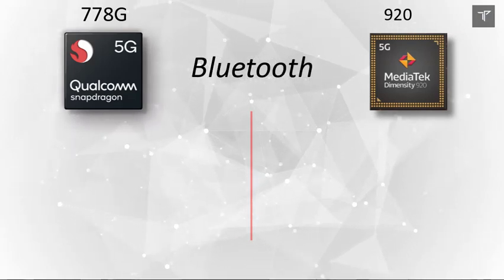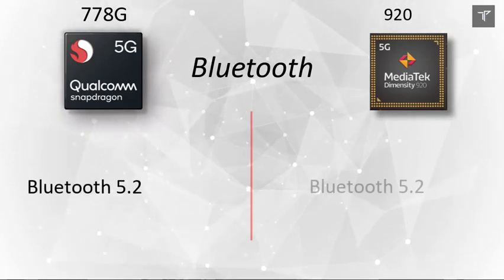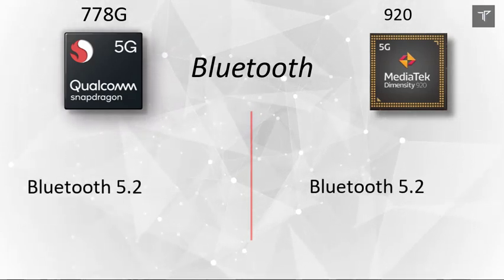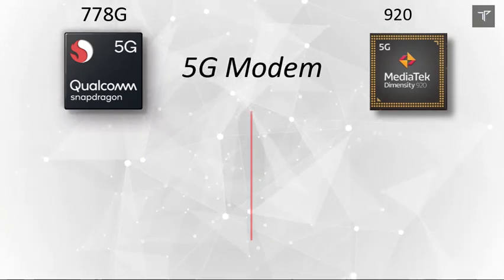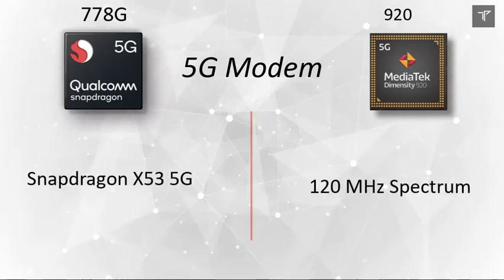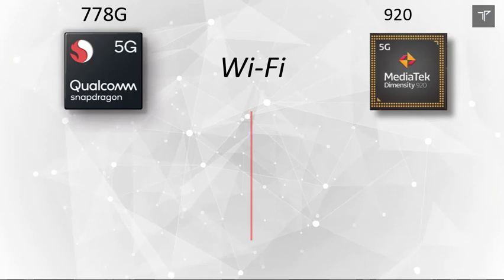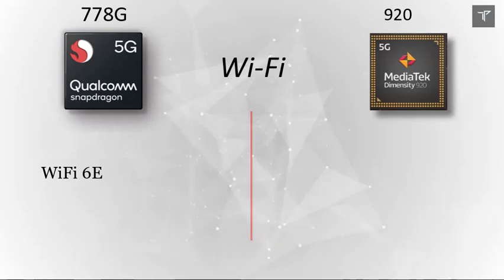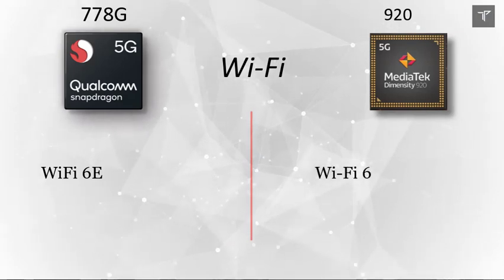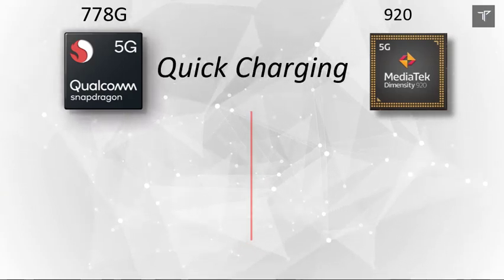The Bluetooth connectivity on both processors is the same at Bluetooth 5.2. Both processors are 5G-enabled with 5G modems. Wi-Fi is also similar on both, supporting Wi-Fi 6E — the enhanced version of Wi-Fi 6 — though the Mediatek comes with standard Wi-Fi 6, which is slightly lower but not a major concern.